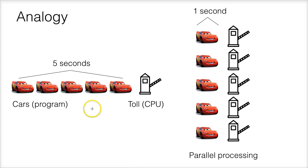We can make use of an analogy to show the concept of parallel processing. For example, we have five cars here and we have a single toll. Let's say if a car needs one second to pass through the toll, then five cars in series will need five seconds to pass through the toll.